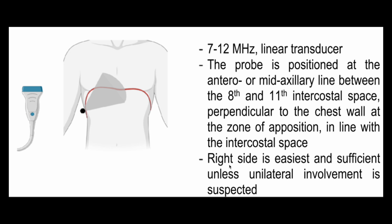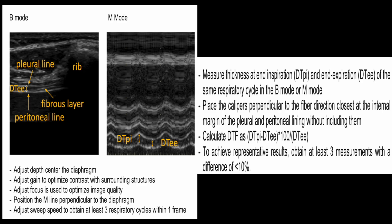The right side is again sufficient; left-sided isolated weakness is rare. The measurement here is slightly more involved. First, adjust depth to center the diaphragm in the image.